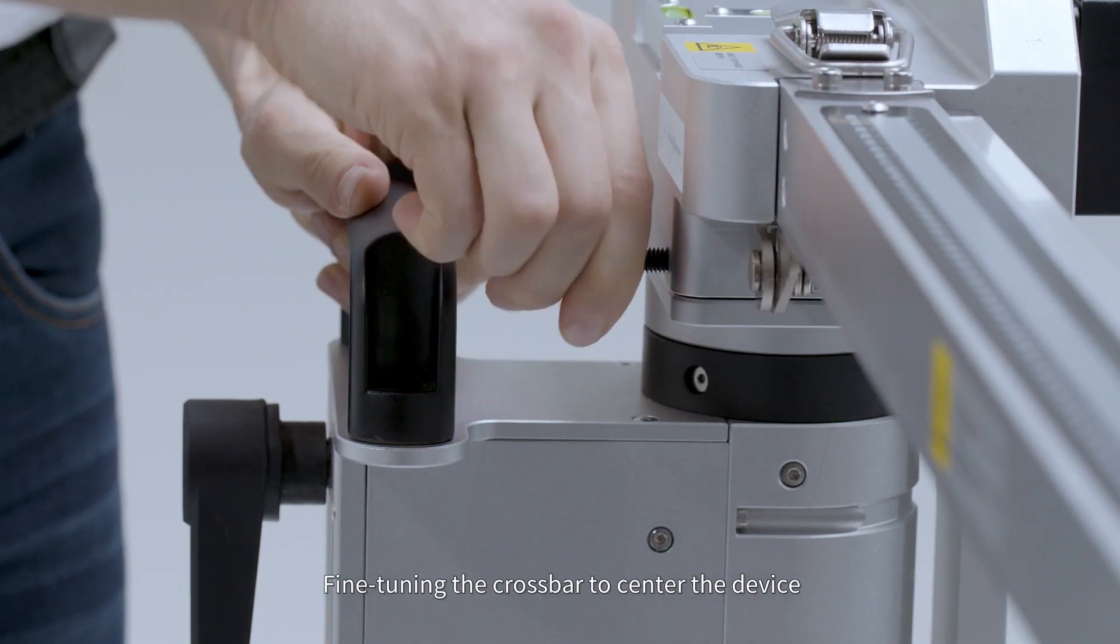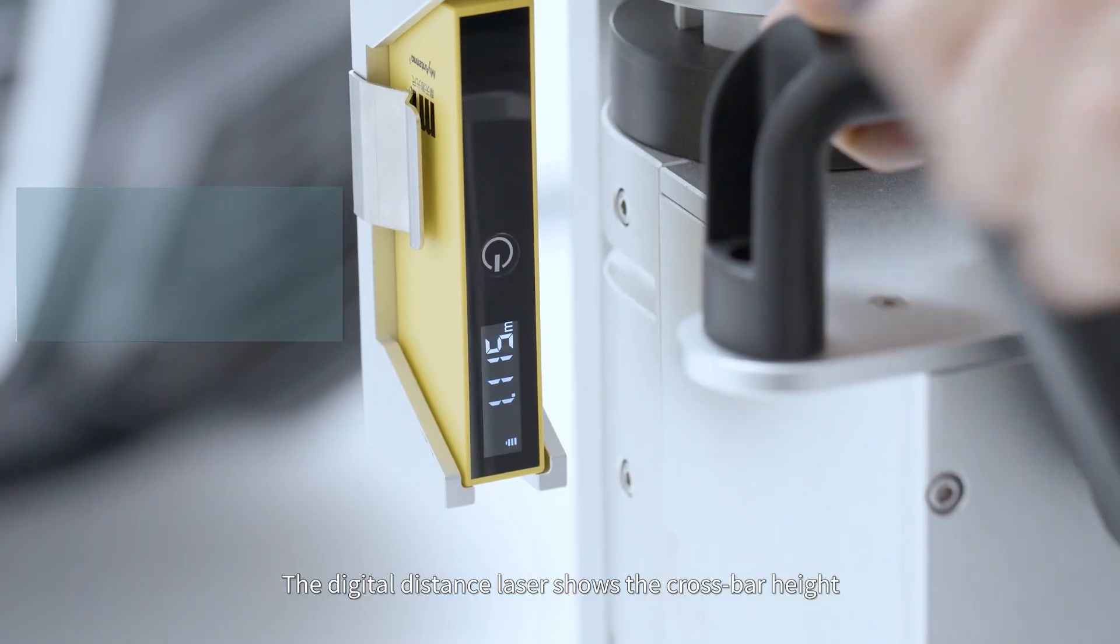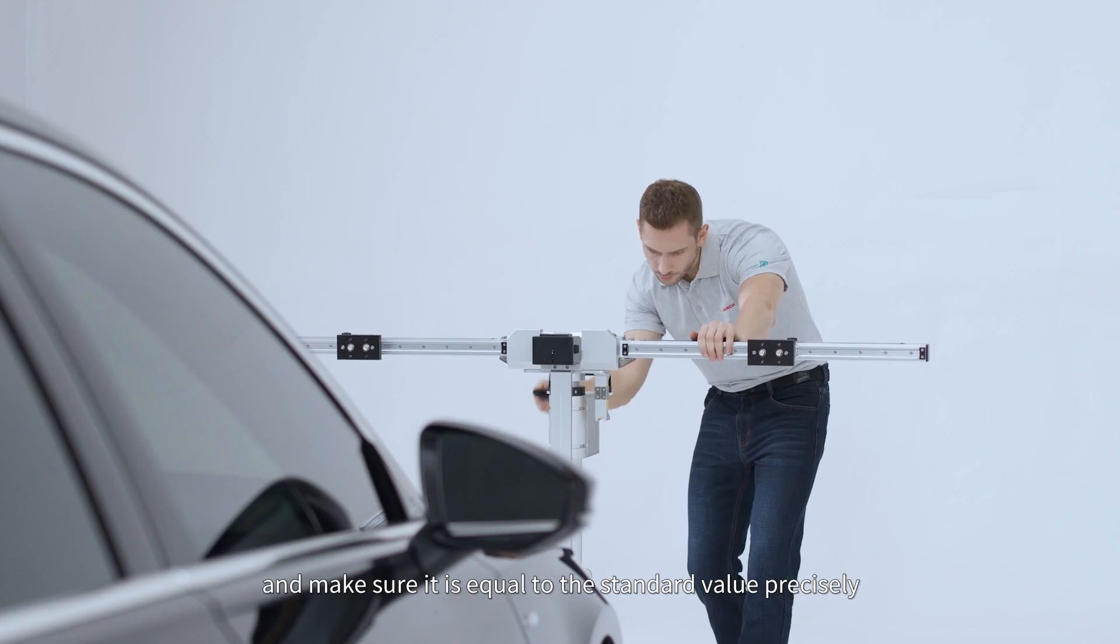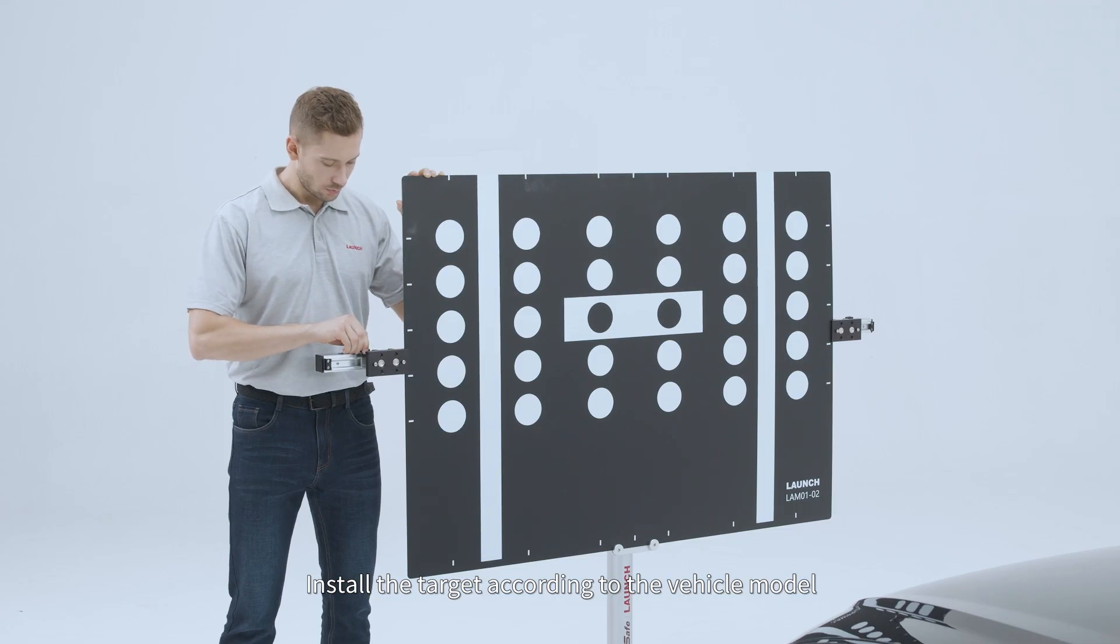Fine-tuning the crossbar to center the device and parallel to the vehicle. The digital distance laser shows the crossbar height and make sure it is equal to the standard value precisely. Install the target according to the vehicle model.